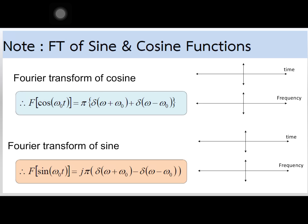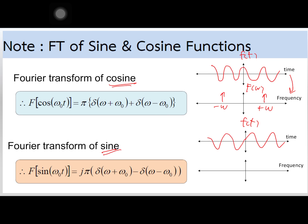For example, if you have a cosine function and you want to see its spectrum, you just do the Fourier transform of it. The Fourier transform of a cosine function gives an impulse at plus omega and at minus omega. Similarly, if you have a sine function in the time domain and you want to see its spectrum, just do the Fourier transform of the sine function and you will get an impulse here and here.